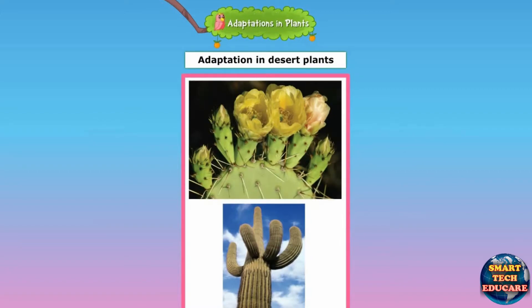Cactus and prickly pear are two typical desert plants. They have very long roots that go deep into the soil in search of water.